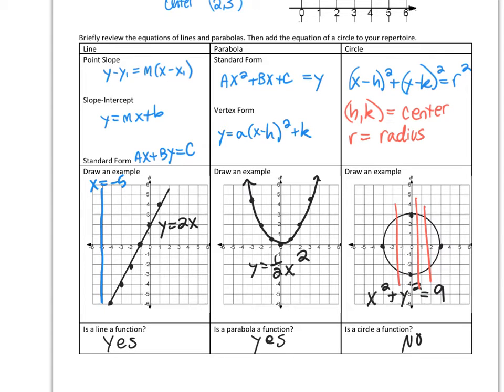So that's one way in which the equation of a circle is going to be different than equations that we've looked at in the past. It represents a relationship that's not functional.